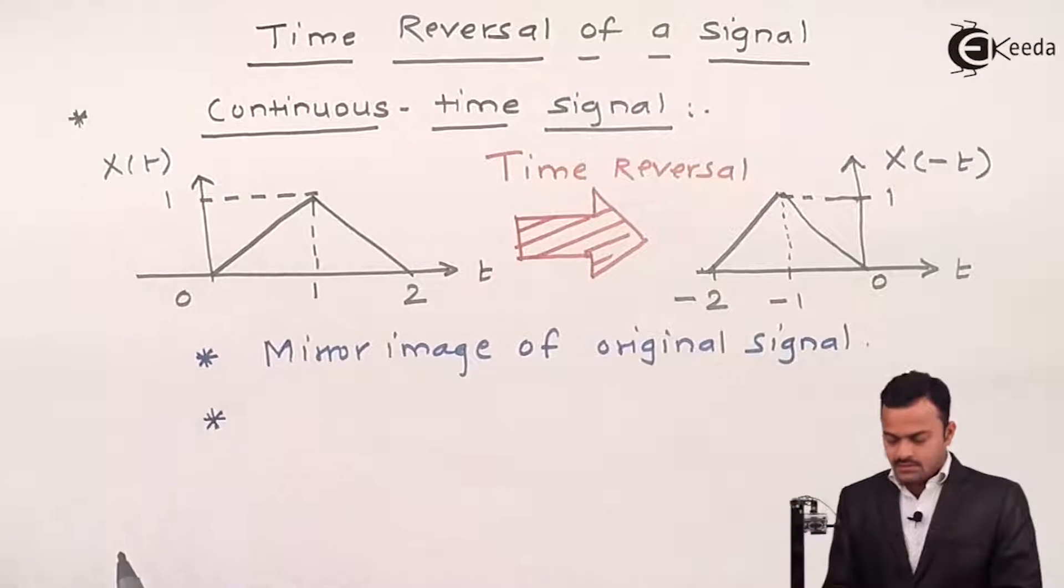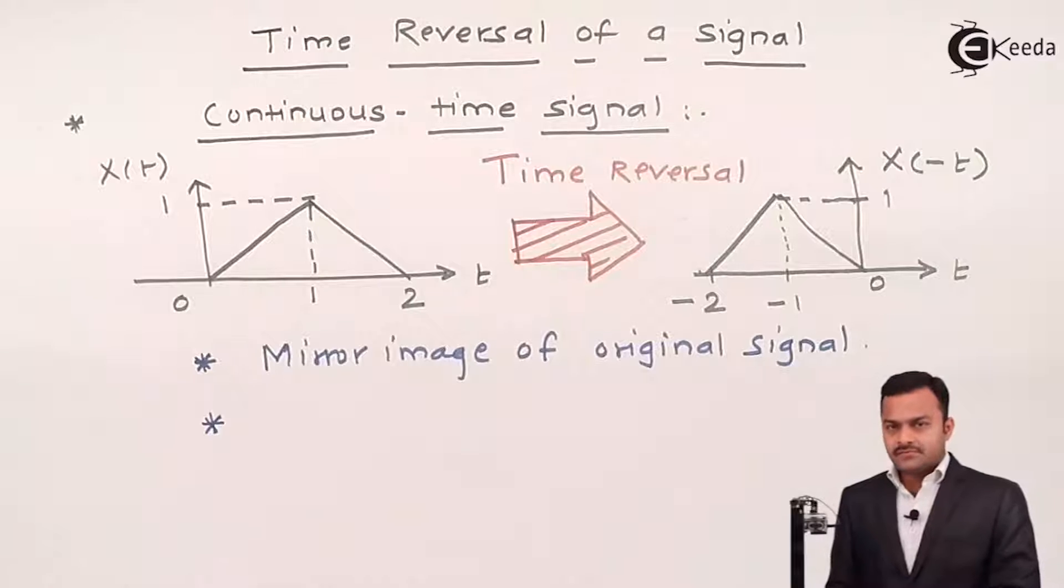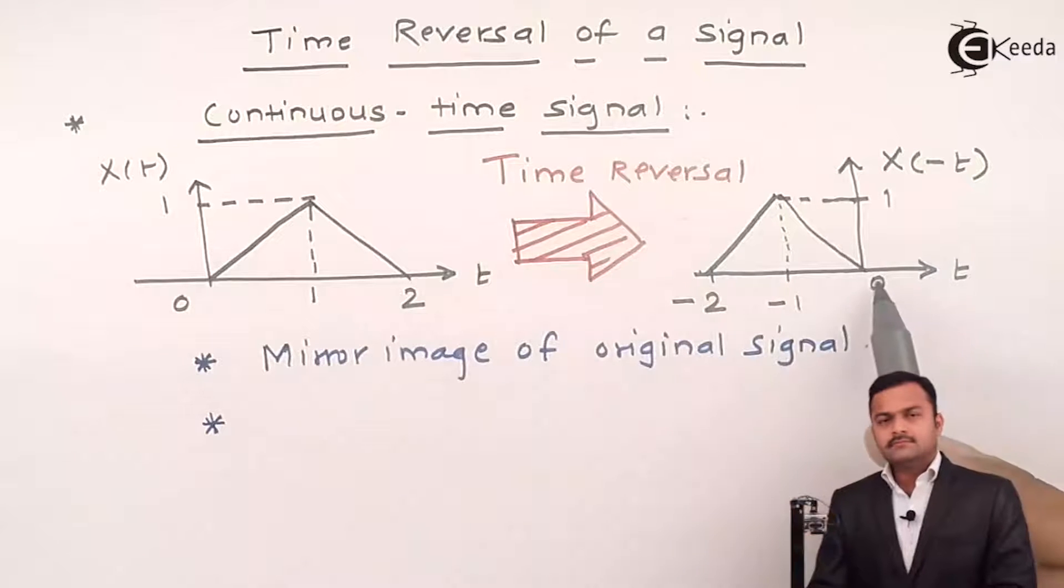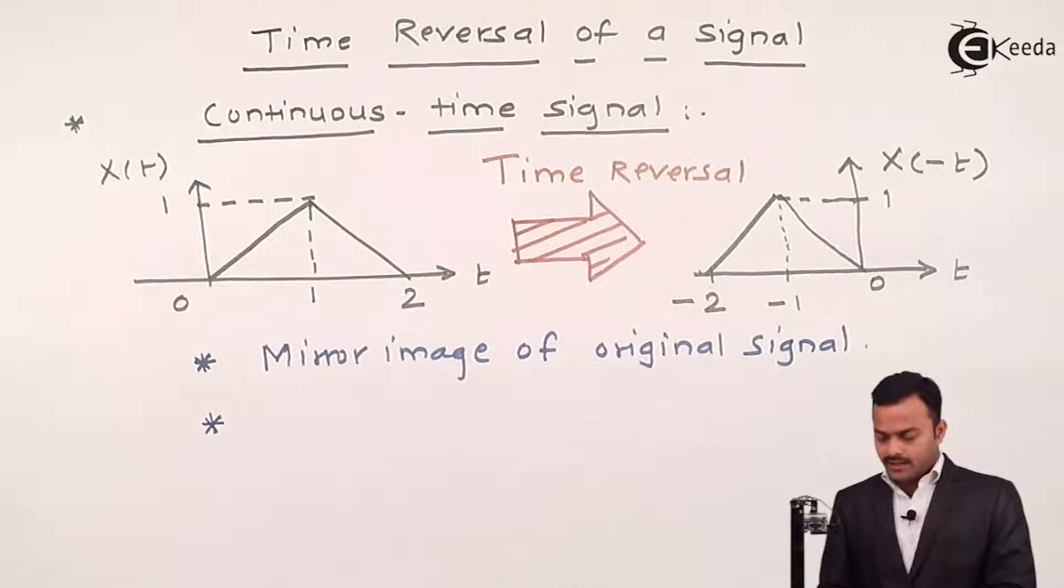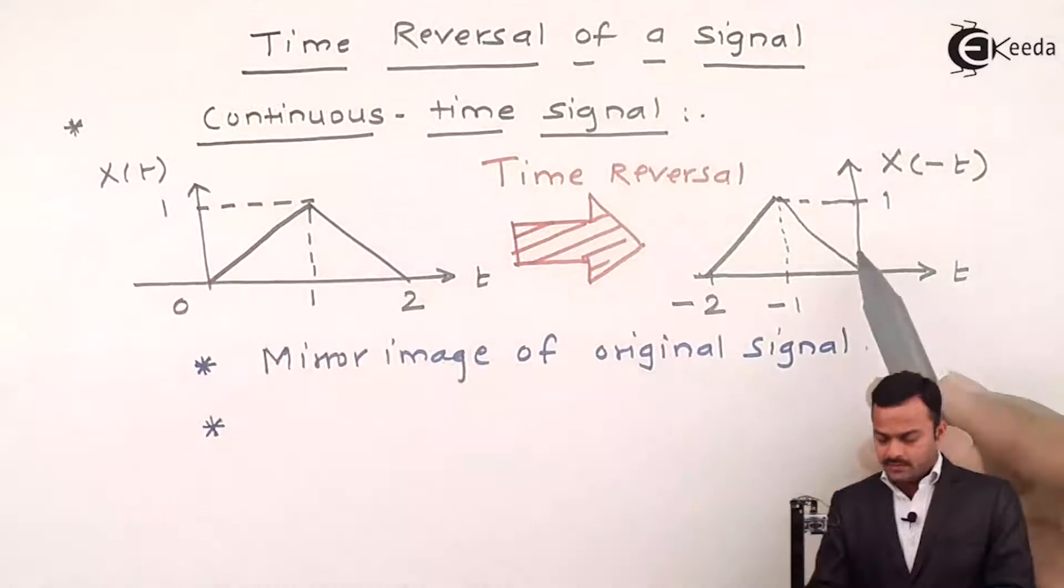This is the operation which gives a change in the independent variable, which is t, without any change in the dependent variable, which is x of t.